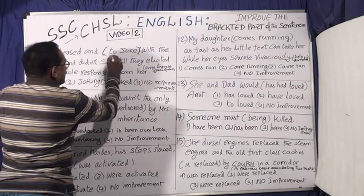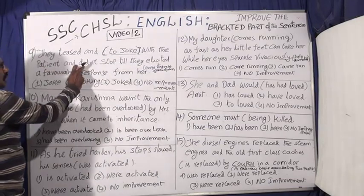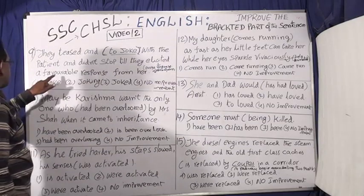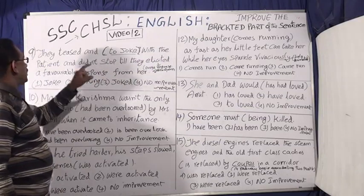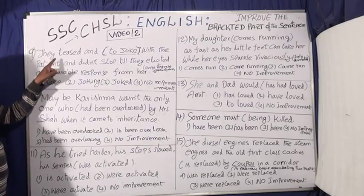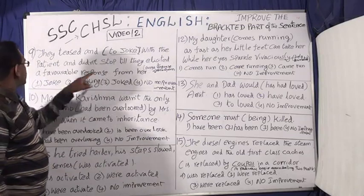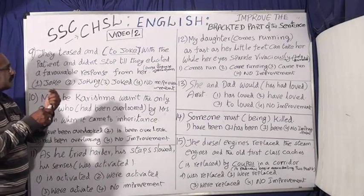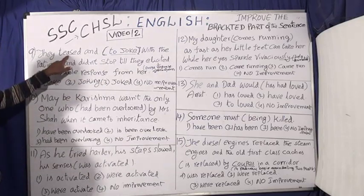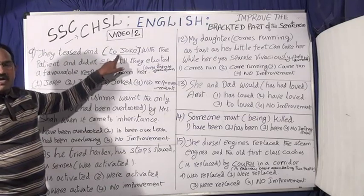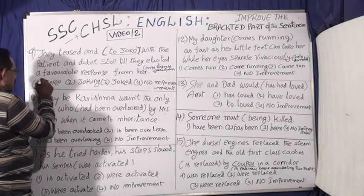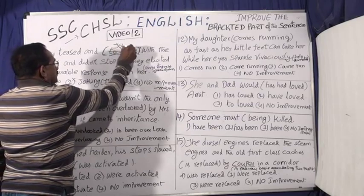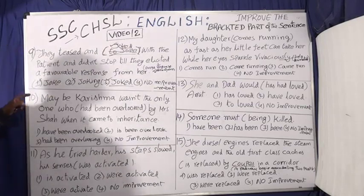Question nine: in the bracket part, what is given? 'To joke' — they teased with the patient and did not stop till they elicited a favorable response from her. Elicited means evoke a response. The verbs in the sentence are in past tense: 'teased' and 'did not stop.' Here also you have to take the past form of the verb. The options are: joke, joking, joked. Your answer is 'joked.' Joked is the correct one.